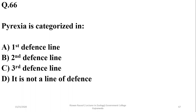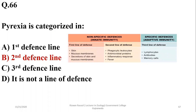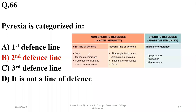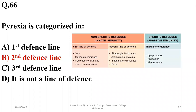Question number 66: Pyrexia (fever) is categorized in which defense line? It is categorized as the second defense line. The first defense line includes skin, mucous membrane, and secretions of skin and mucous membrane. The second defense line is comprised of phagocytic white blood cells, antimicrobial proteins, inflammatory response, and fever. The third line of defense involves lymphocytes, antibodies, and memory cells produced by lymphocytes.